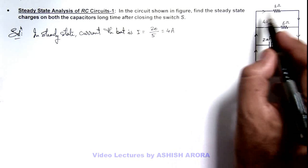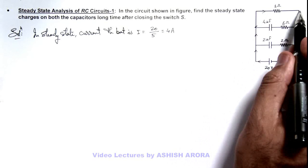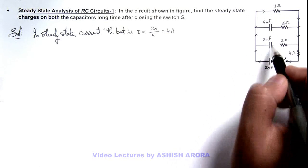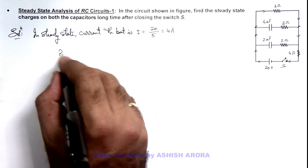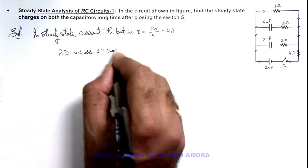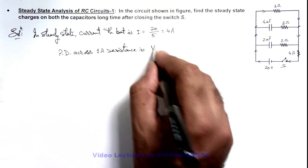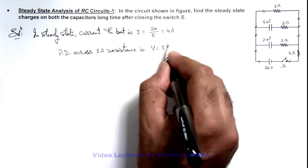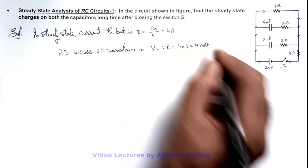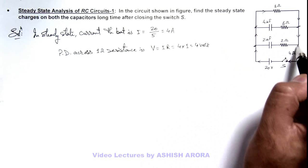If we calculate the potential difference across this system, we can say it'll be the potential difference across 1 ohm because this 1 ohm, this branch, this branch are connected in parallel. The potential difference across 1 ohm resistance is i*r, that is 4 multiplied by 1, this is 4 volt. So the potential difference across this section as well as this section is also 4 volt.